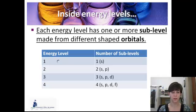So inside each energy level, there's one or more sublevel made from different shaped orbitals. Energy level one, that's the very first circle that you draw, just has one sublevel. And it's the S shape. Energy level two has an S-shaped sublevel and a P-shaped sublevel. Energy level three has three sublevels. It has an S, a P, and then a D-shaped sublevel.